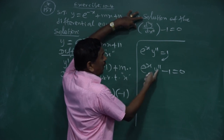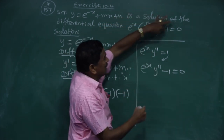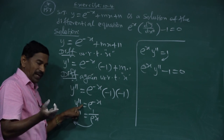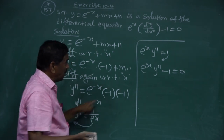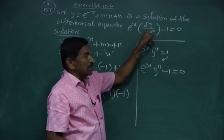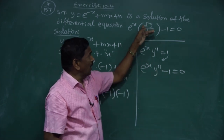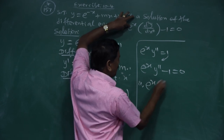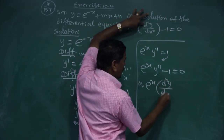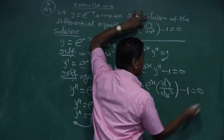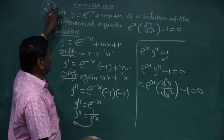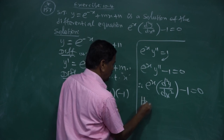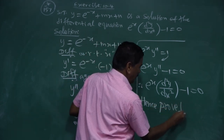To summarize: differentiate y = e^(-x) + mx + n twice to get y'' = e^(-x) = 1/e^x. Cross multiplying gives e^x·y'' = 1, and transposing gives e^x·(d²y/dx²) - 1 = 0. Hence proved.